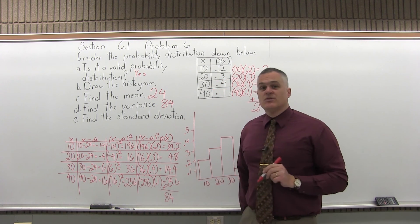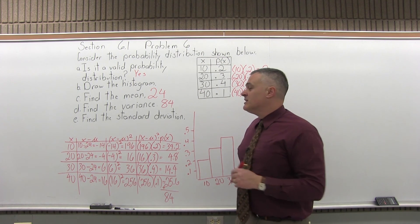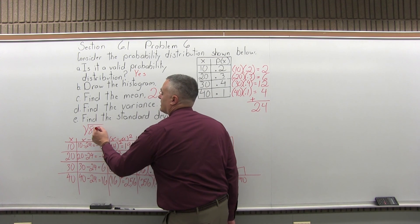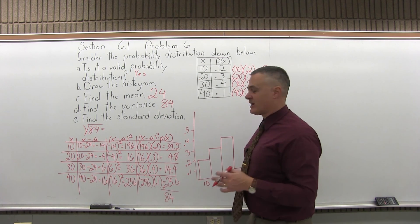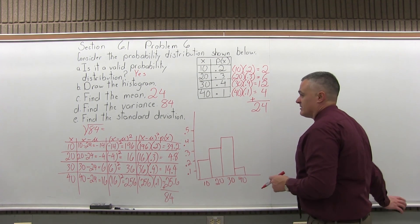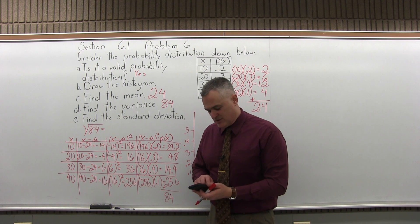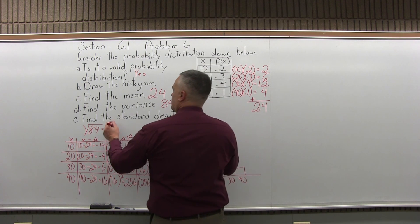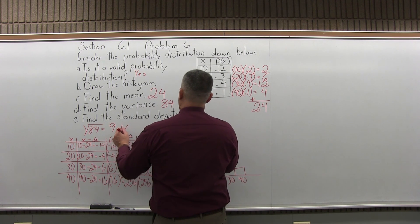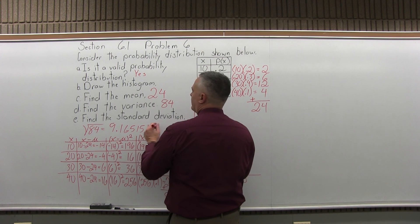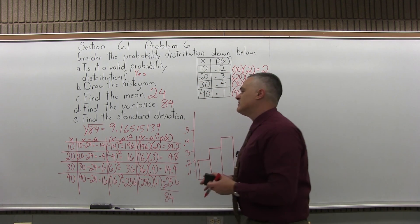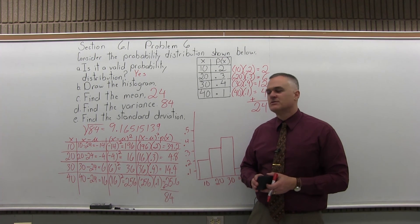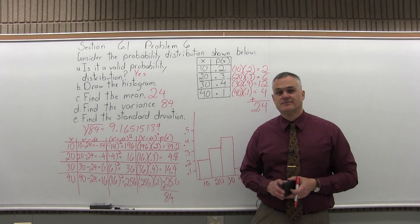And finally, part E, the standard deviation. The standard deviation is the square root of whatever the variance was, square root of 84. Now that I need a calculator for. I can estimate it a little bit, but to get an accurate answer, I do need the calculator. So square root of 84, the calculator says 9.16515139. It's a little bit more than, not quite, say 9.2. So pretty close. And that's it.